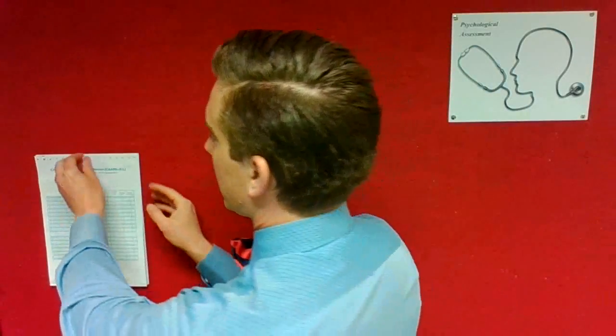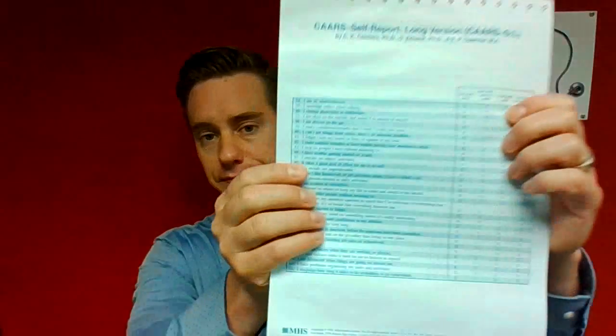Other objective tests are even more specific. A great example is the Connors tests for ADHD. It's a self-report form where the client rates how frequently a number of different problems occur — related to inattention, hyperactivity, difficulty paying attention, staying on task, and impulsivity. This is a very particular objective test that informs the clinician or researcher about one specific diagnosis: ADHD.